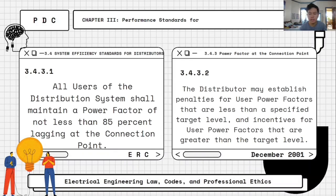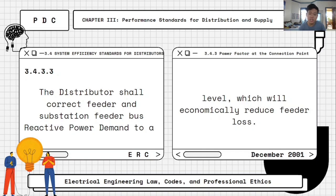Under Chapter 3.4.3, power factor at the connection point: power factor measures how efficiently electrical power is converted into useful work output. All users of the distribution system shall maintain a power factor of not less than 85% lagging at the connection point. The distributor may establish penalties for user power factor below a specified target level and incentives for power factor above that target. The distributor shall also correct feeder and substation feeder bus reactive power demand to a level which will economically reduce feeder loss.